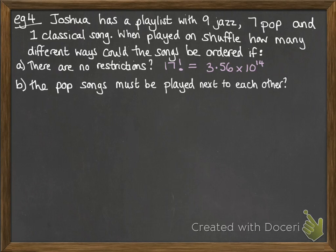Secondly, the pop songs must be played next to each other. So we need to have a bank of those seven pop songs together, and then the nine jazz and one classical separately. So that makes 11 items. If we put those seven pop songs together as one item, then we add on the nine jazz and the one classical, that's 10 separate items like we've seen before.